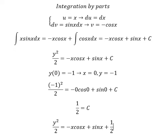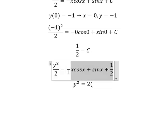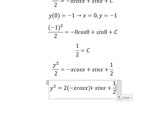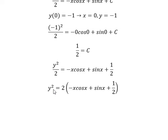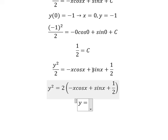To get the final answer, we multiply both sides by two. Then we take the square root of both sides. We find that y equals negative square root of the expression — we take only the negative root.